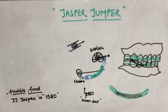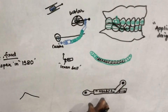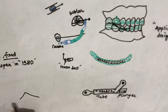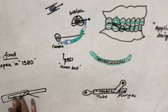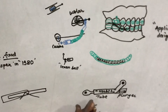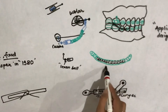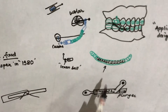The Jasper Jumper was introduced by J.J. Jasper in 1987. Its action is similar to the Herbst appliance, but the Jasper Jumper lacks rigidity. The Herbst appliance consists of a tube and a plunger (a rod inside the tube) and is rigid because it has no coils. In contrast, the Jasper Jumper has a coil, making it flexible. The action of both is similar, but the key difference is flexibility.